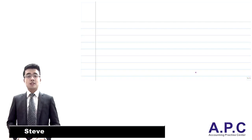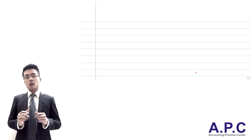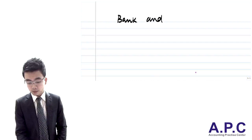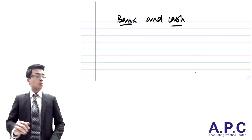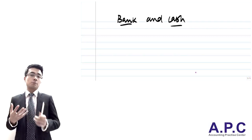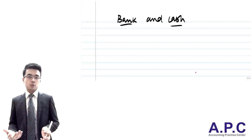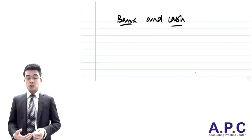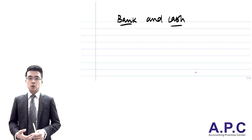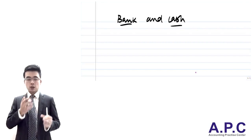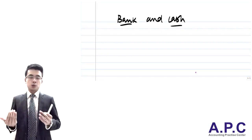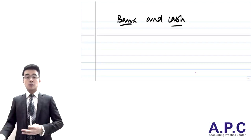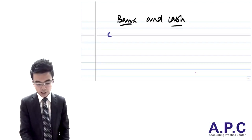Hi, this is Dave from ACCAAPC.com. Today we're going to look at the substantive procedures for bank balances as well as cash on hand. Bank balances and cash on hand are particularly important for the business because they are liquid assets. In real life, bank balances and cash may be stolen, so we must verify they reflect what the company actually has. When performing substantive testing for bank and cash, we'll focus on CCSR.